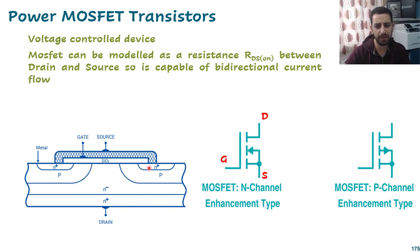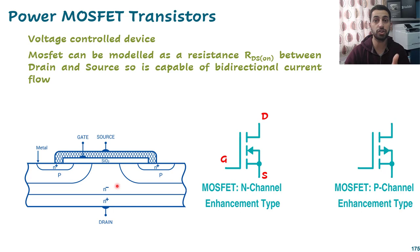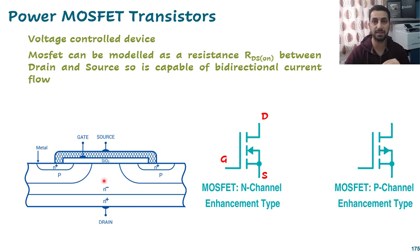If you look deeply into the structure, you can see N, P, and N junctions, as well as P and N junctions. This means that inside the MOSFET, there are structures corresponding to other components — like BJT transistors and diodes. That's why this structure has inherent parasitic components.